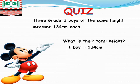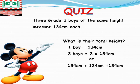So, we'll say one boy equals 134 cm. Therefore, three boys will measure three times 134 cm. Or, just add 134 cm in three places. So, when you do that, you'll get 402 cm.